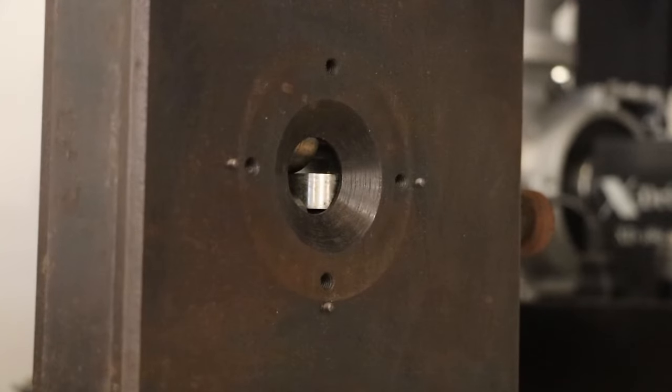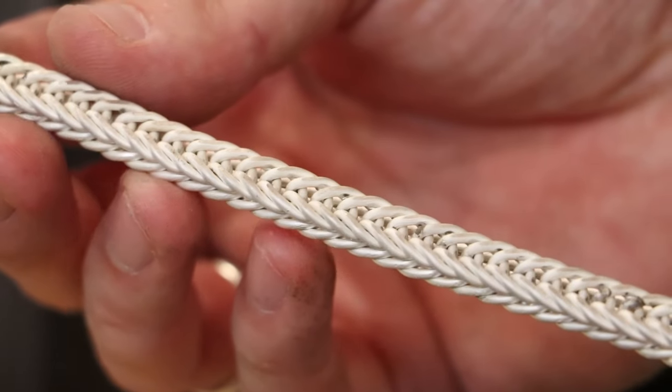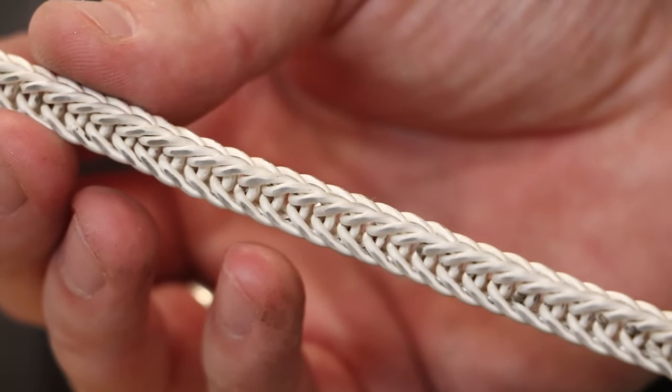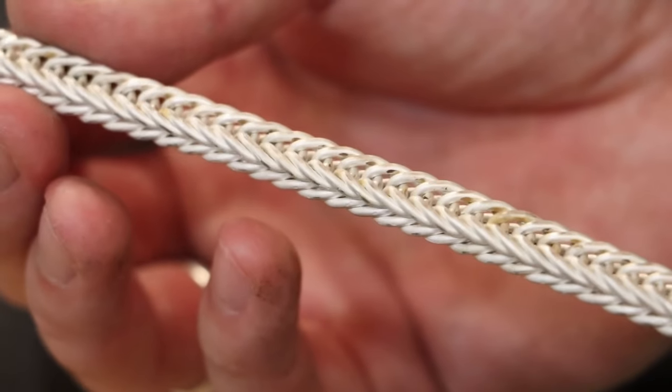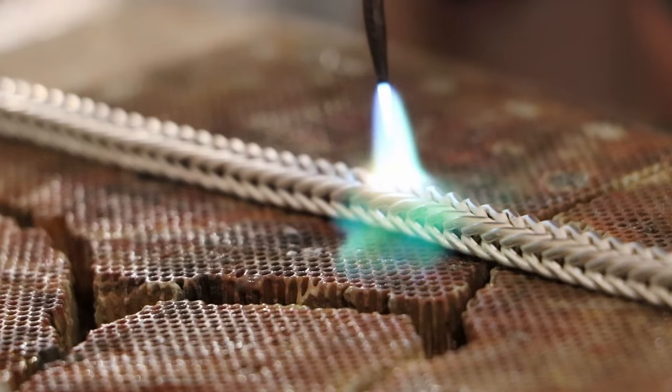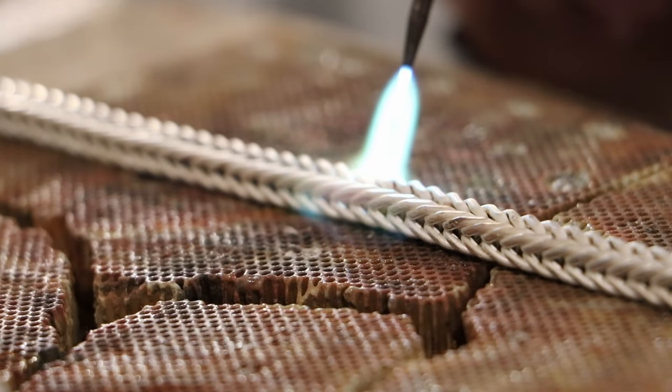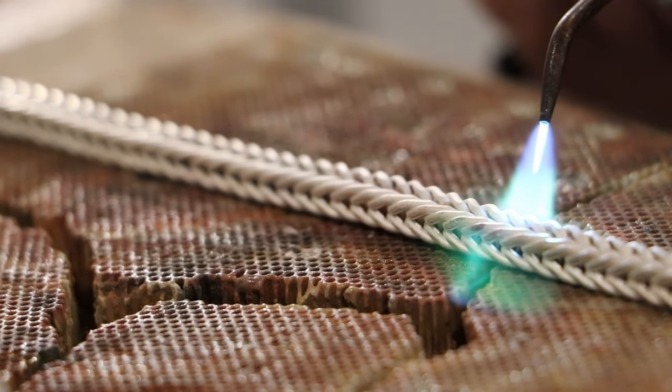The real magic begins in the workshop. The silver is cut, shaped, and molded into the initial form of the bracelet. This is when the metal meets the flame. Heating allows the silver to be manipulated without breaking. It's bent, hammered, and twisted until the shape is just right.